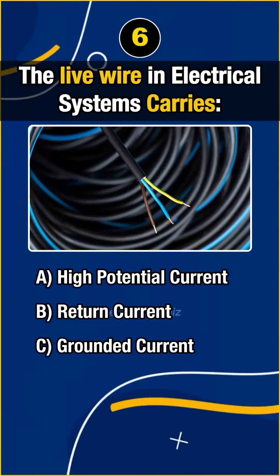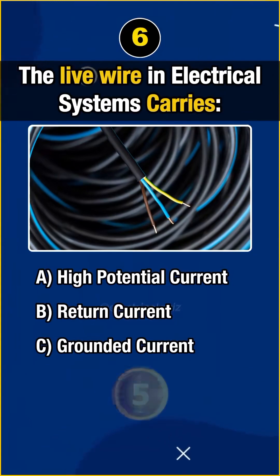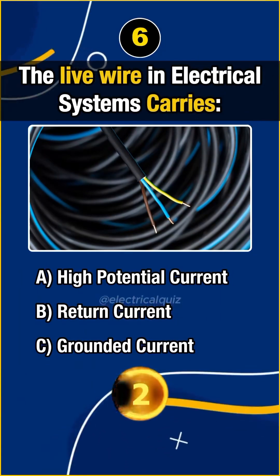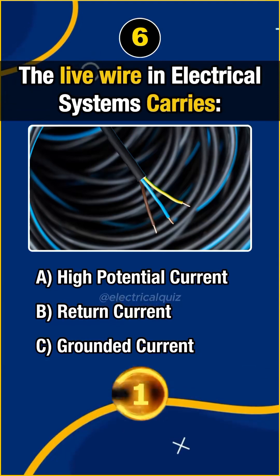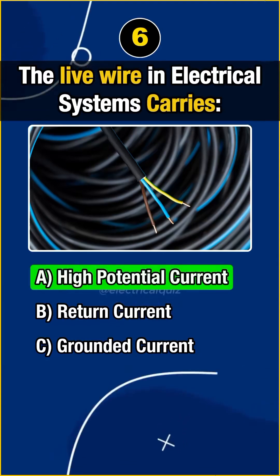Question 6: The live wire in electrical systems carries? Answer A — High potential current.